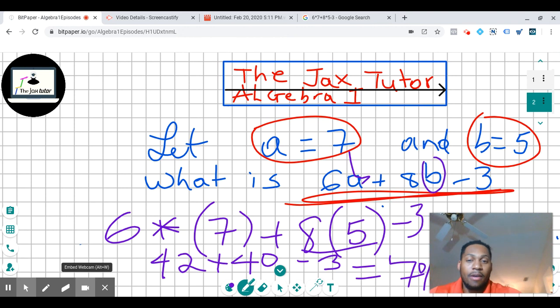And then we calculate everything, and we have 6a plus 8b minus 3 is equal to 79. If you enjoyed this video, please share it with someone that you know this might help.